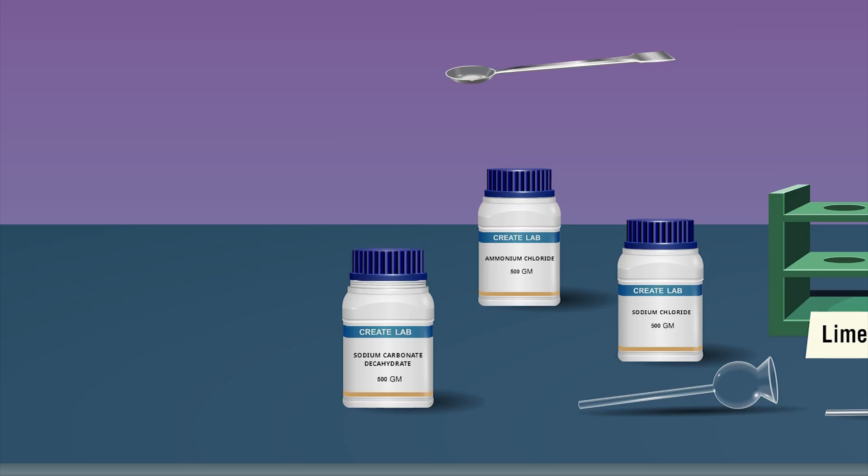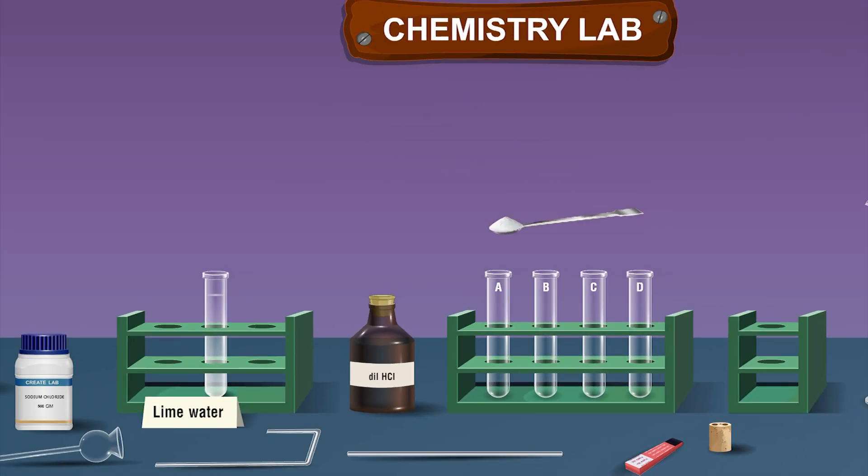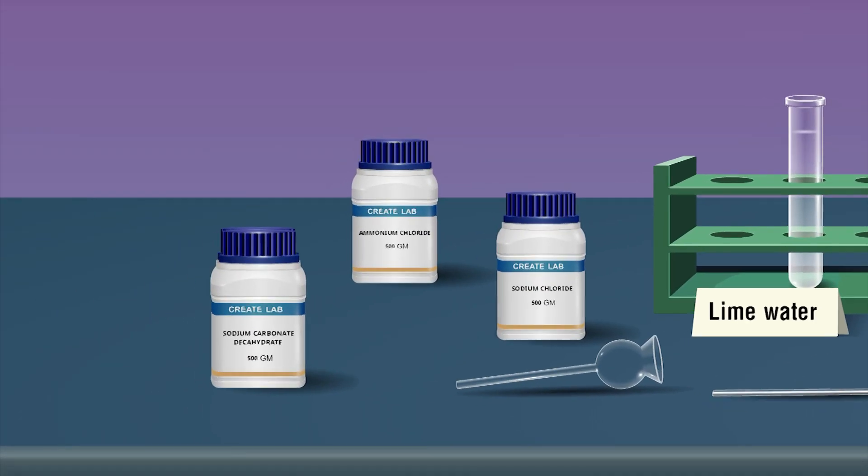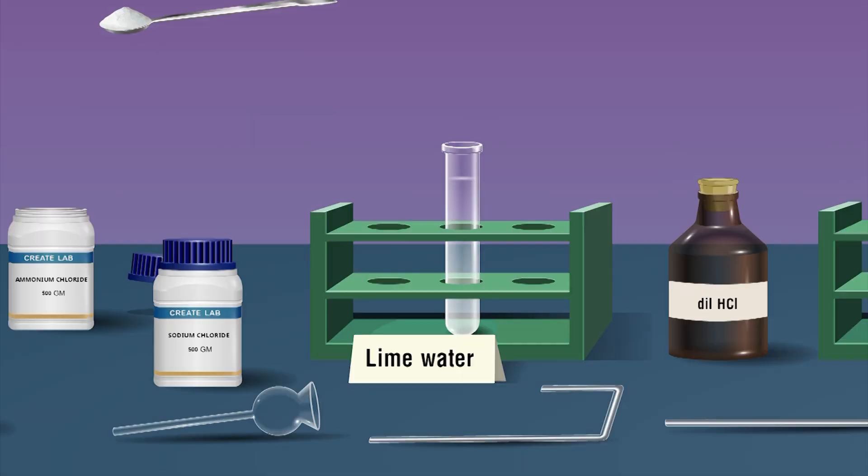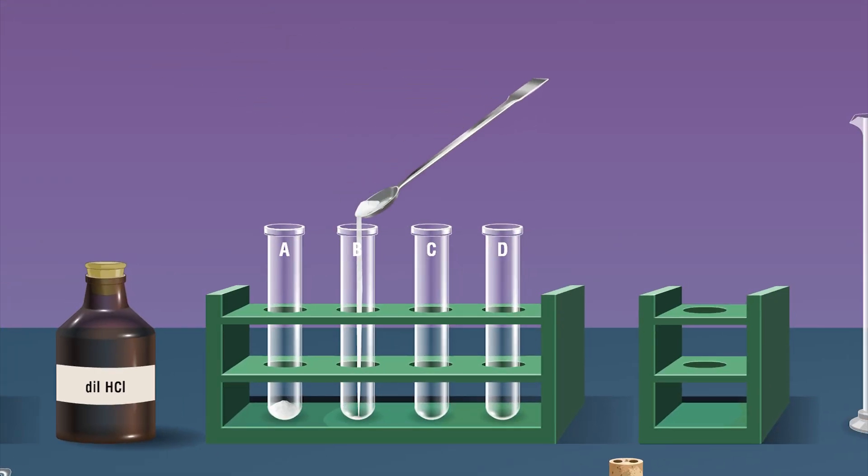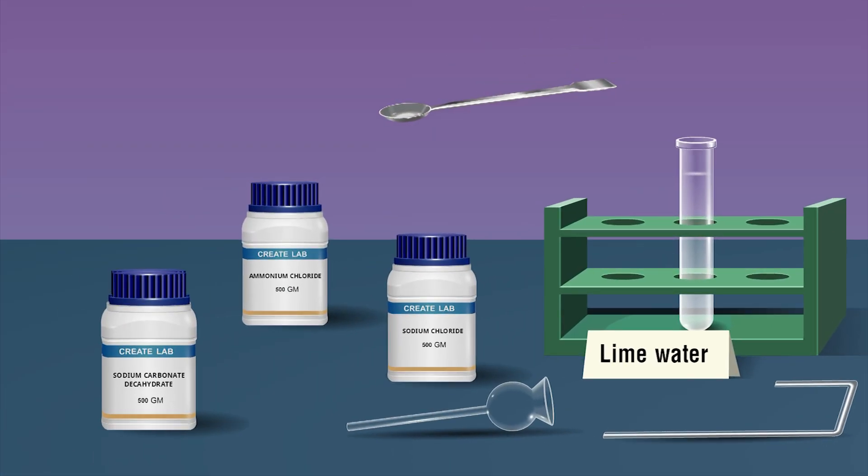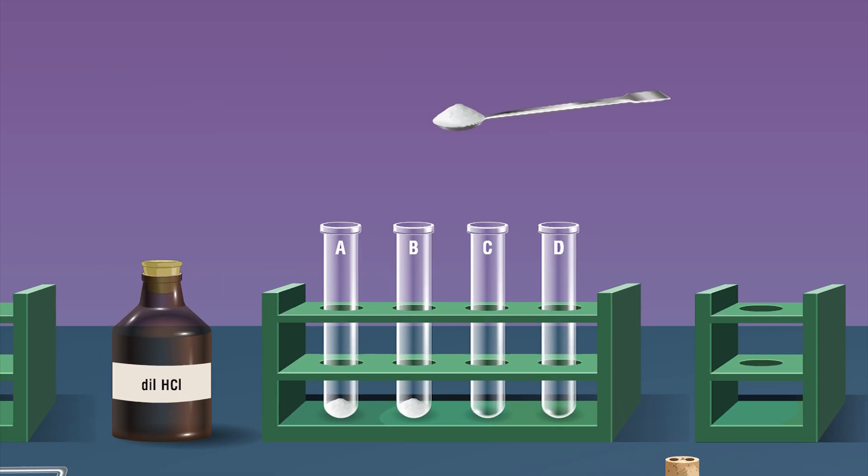For the procedure, take one gram of each given sample. Put sodium carbonate decahydrate in a test tube labeled A, one gram of ammonium chloride in test tube B, and one gram of sodium chloride in test tube C.